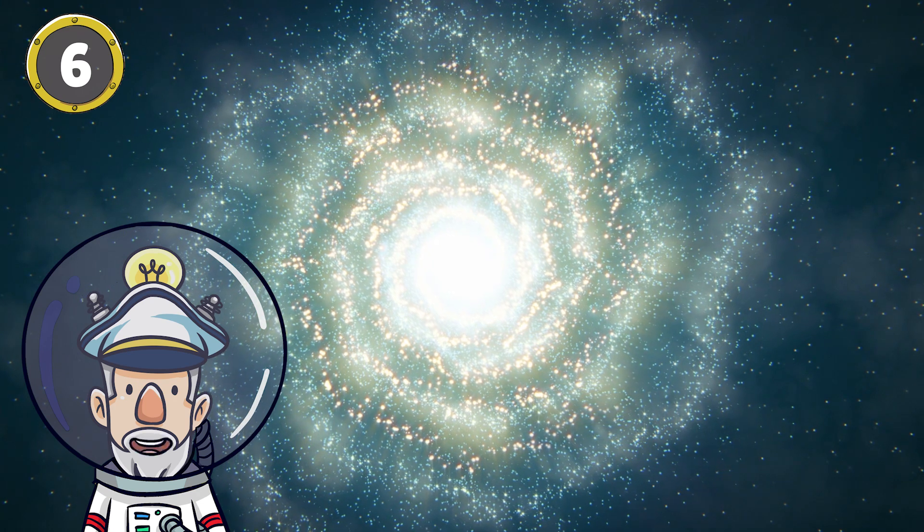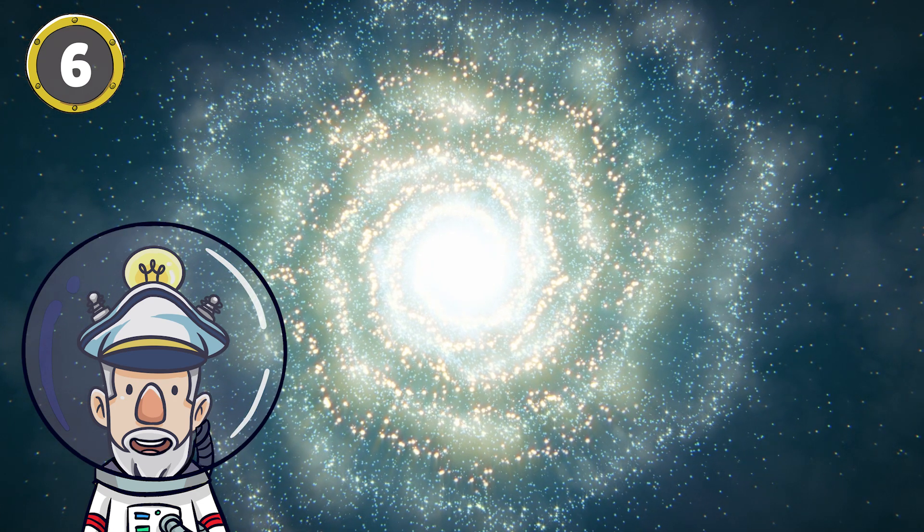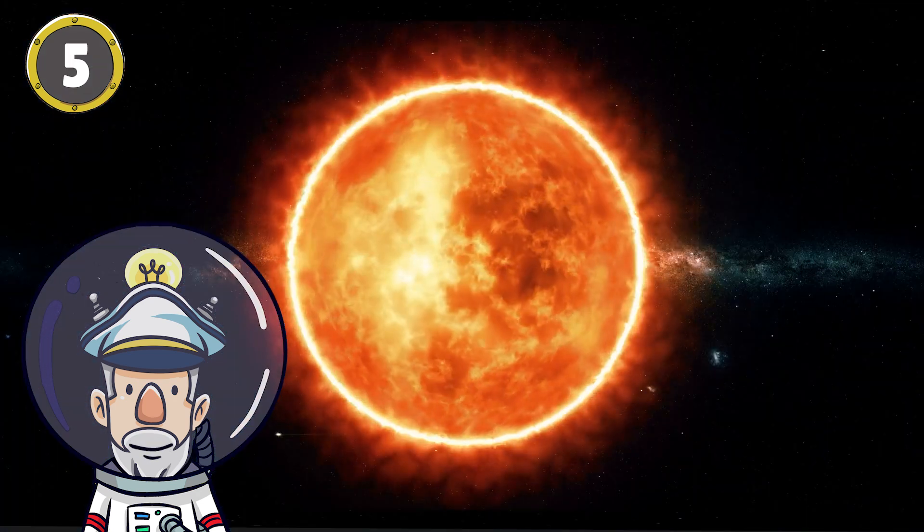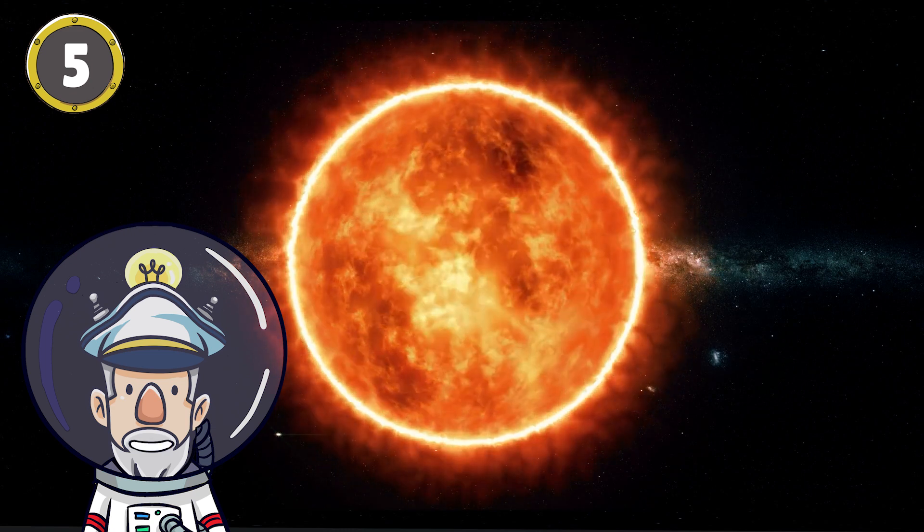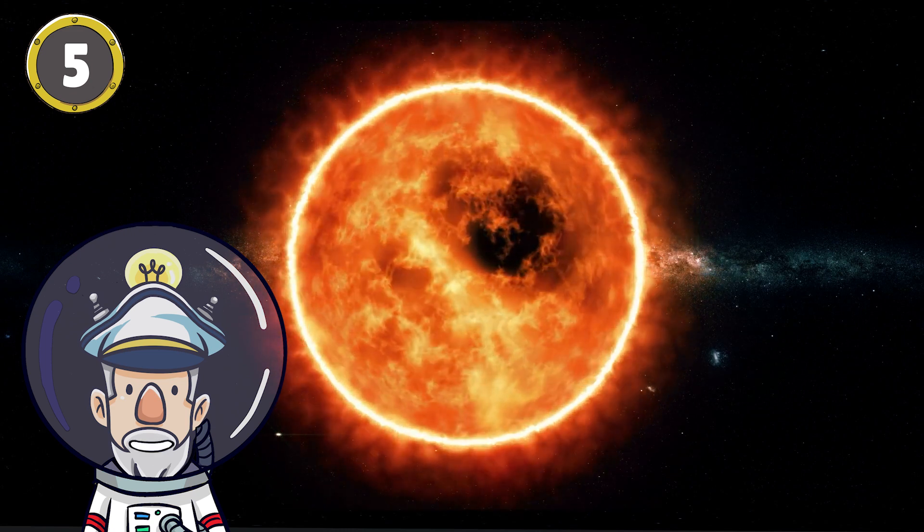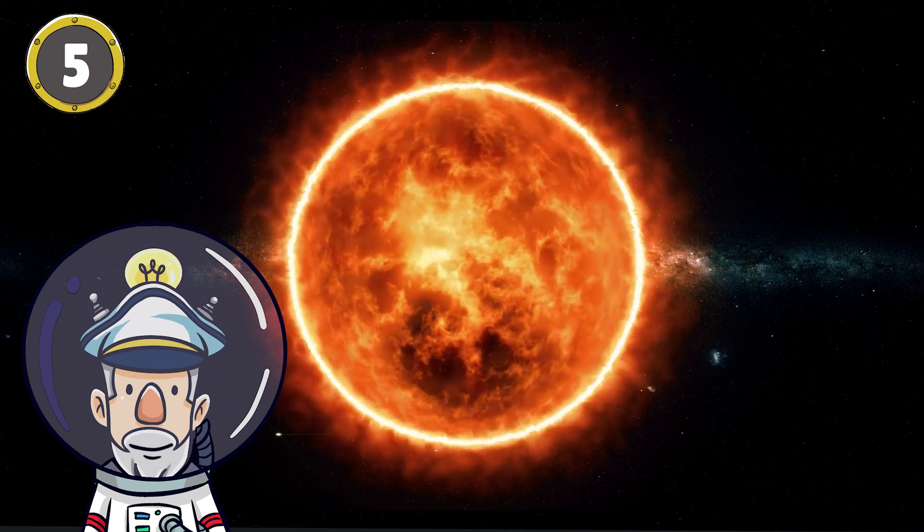Number 6: The Sun is approximately 4.6 billion years old. Number 5: The Sun's core is about 27 million degrees Fahrenheit. That's very hot!